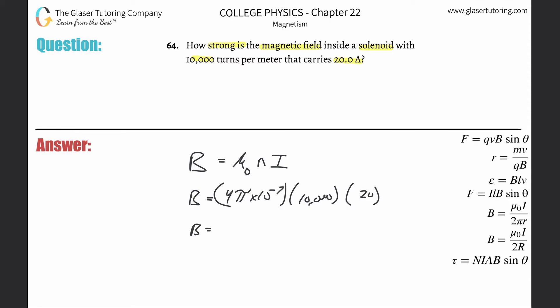So nice little simple plug and chug, right? So 4π times 10 to the minus seventh multiplied by 10,000 multiplied by 20. And you get a value now of about 0.25 Tesla.